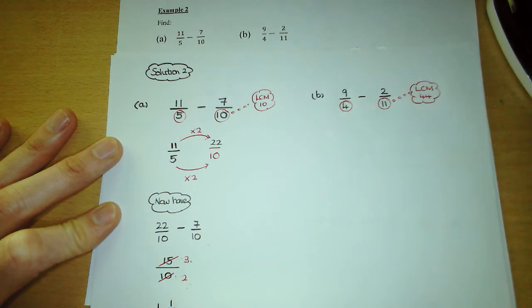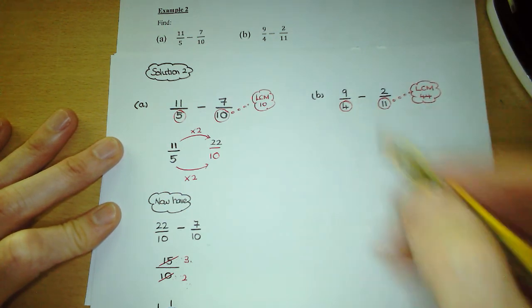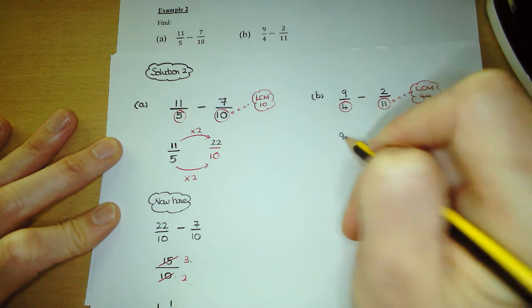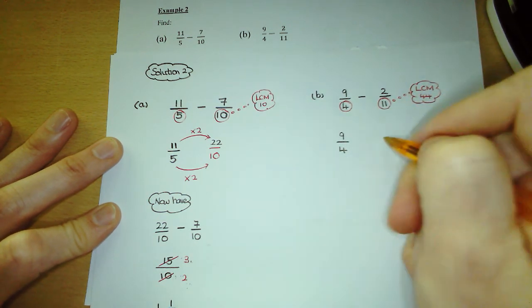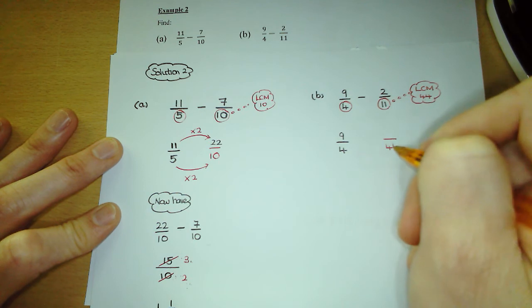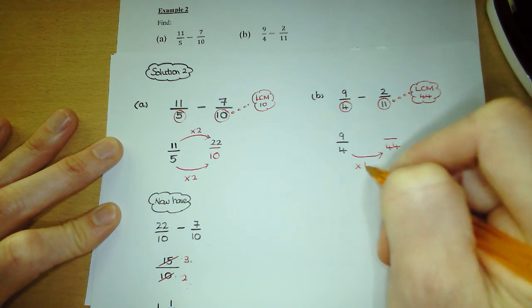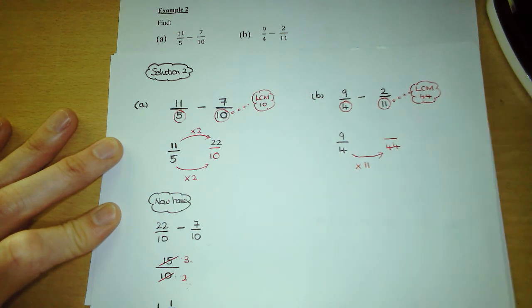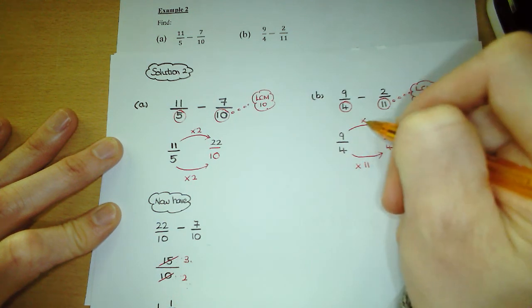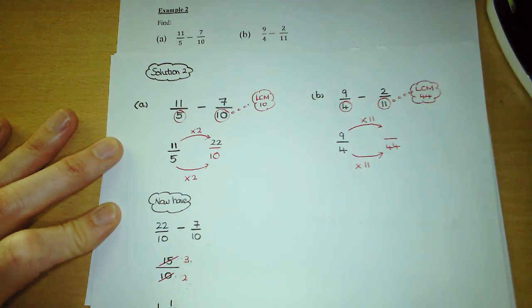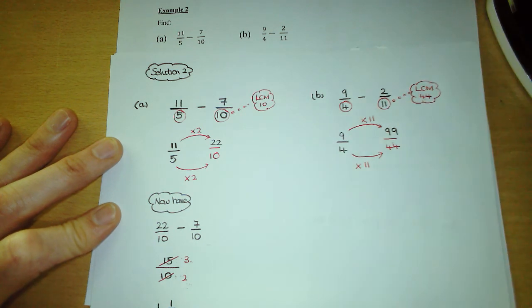We're going to turn each fraction into an equivalent fraction with a denominator of 44. Starting with 9 over 4: we want to make its denominator 44, so we're going to have to multiply 4 by 11, and then do exactly the same thing to the numerator — multiply it by 11 — and that gives us 99 over 44.